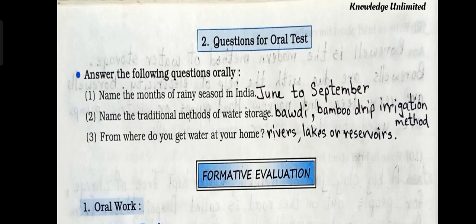Questions for oral test. Question number one: name the months of rainy season in India — the answer is June to September. Number two: name the traditional methods of water storage — answer: bawdi, bamboo drip irrigation method. Number three: from where do you get water at your home — answer: rivers, lakes, or reservoirs.